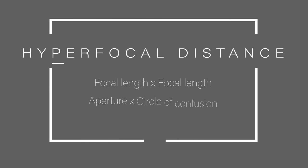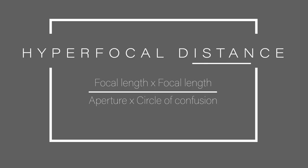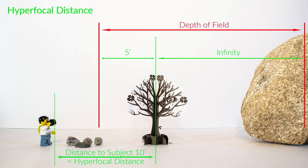The hyperfocal distance is a somewhat complicated mathematical equation, but we don't really need to go deep into the math to understand how to use it. The three factors needed to calculate the hyperfocal distance are the aperture, the focal length of the lens, and the circle of confusion — a number that represents how sharp a pixel would be perceived from a given camera sensor. The hyperfocal distance is the distance between the camera and a point in your scene at which everything from half the distance to that point and beyond to infinity will be acceptably sharp.